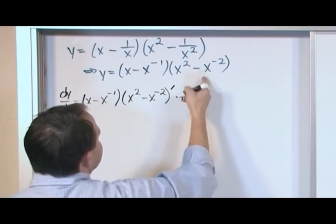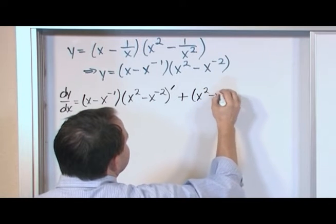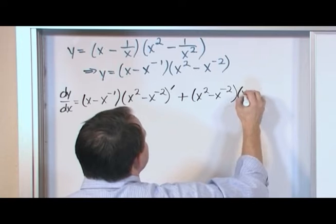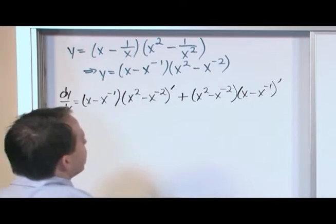Plus the second term x squared minus x to the negative 2 times the derivative of the first term, which is x minus x to the negative 1. Take its derivative.